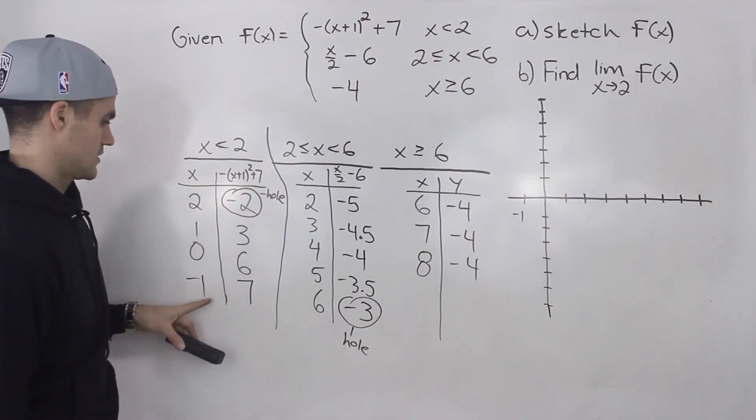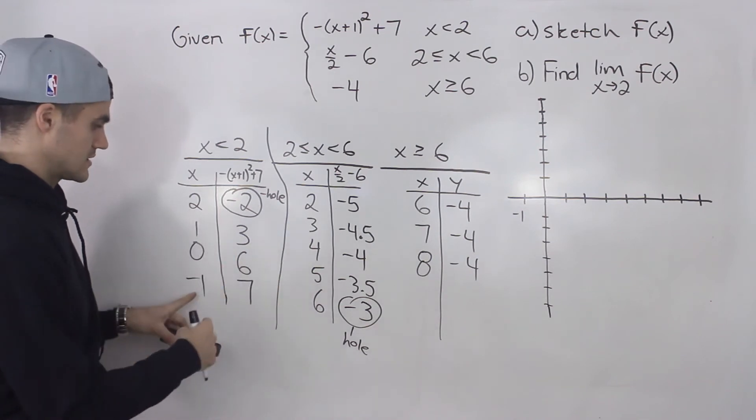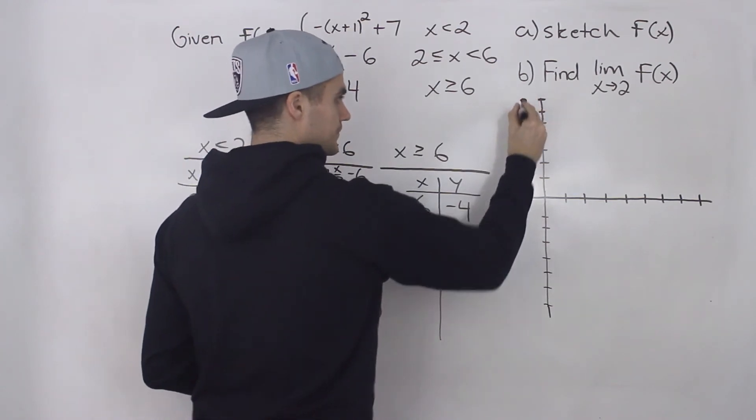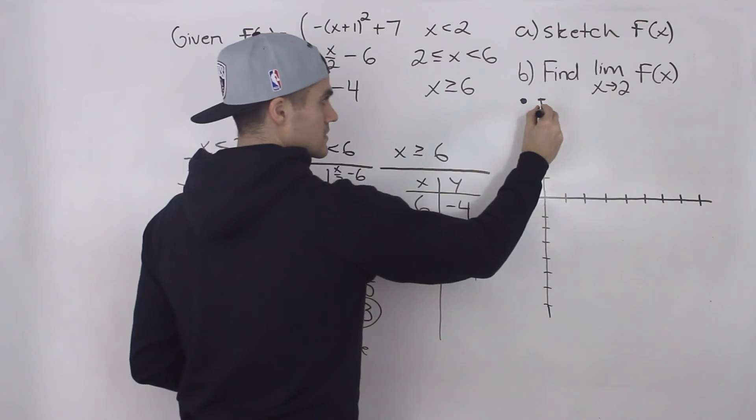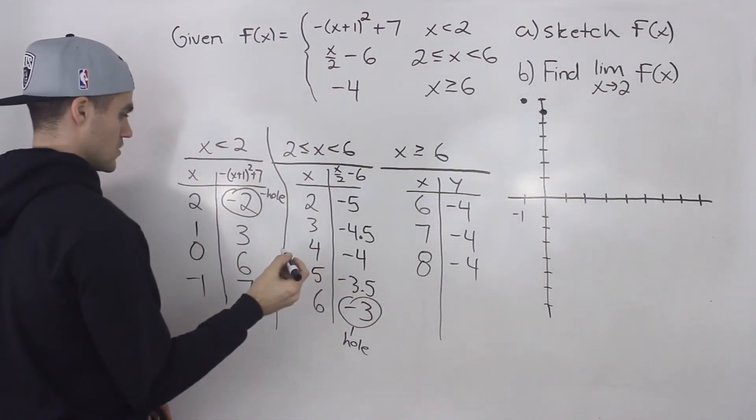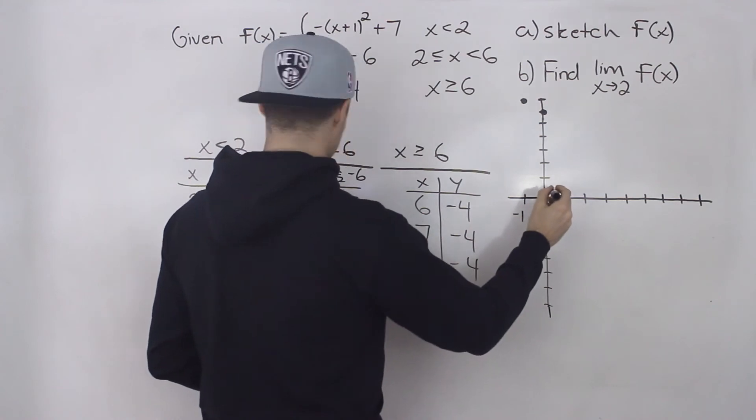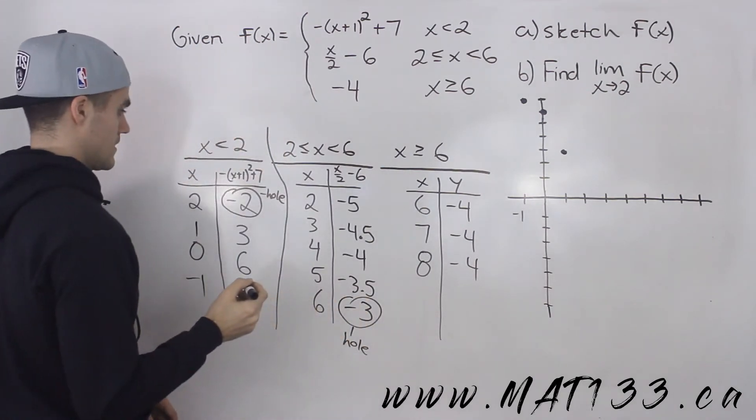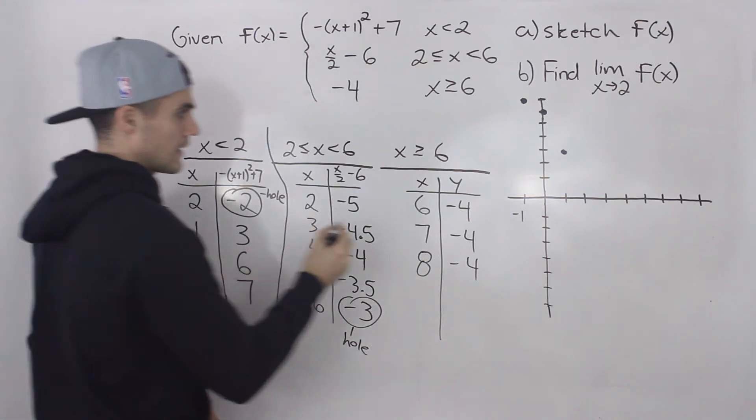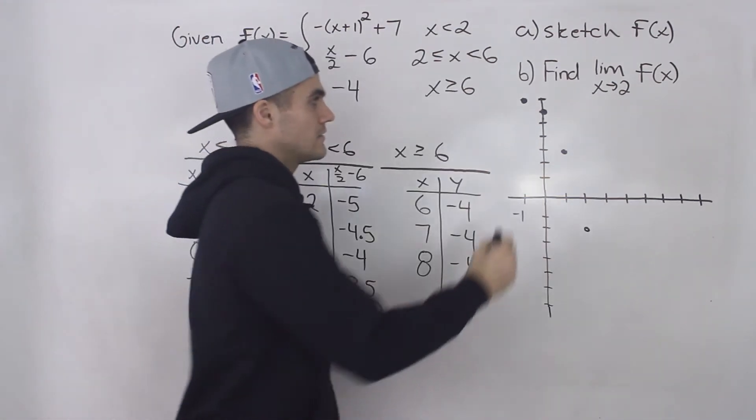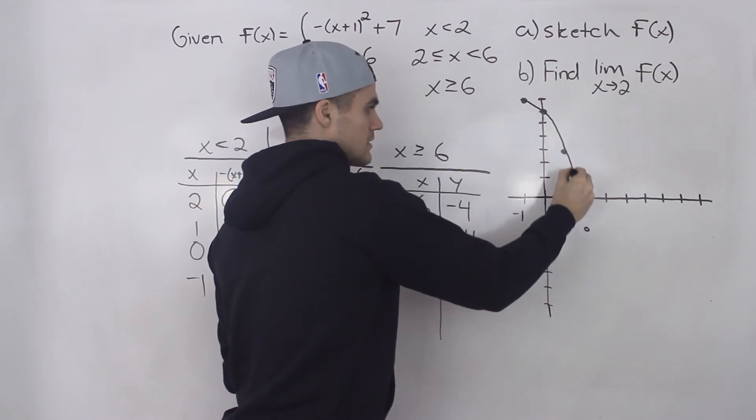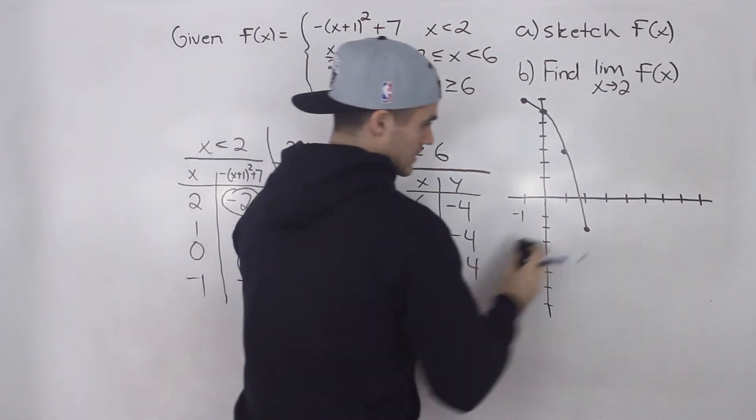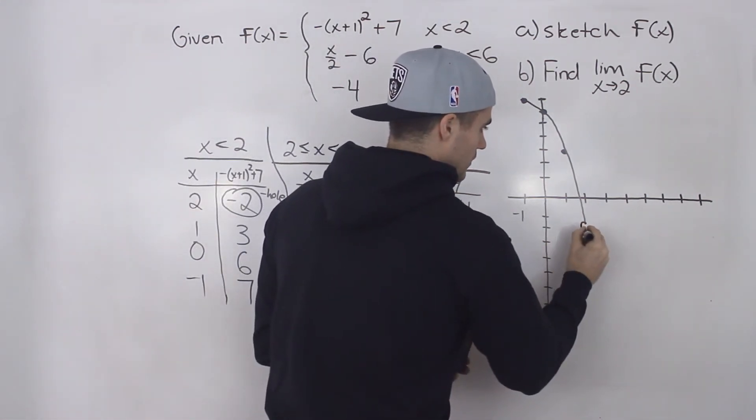So let's start off with this one. So let's start off with the x value that is furthest to the left. So this negative one, we got negative one and seven, which would be up here. And we got zero and six, which is there. One and three, one and three is where that's going to be here. And then two and negative two is down here. So if we combine these points here, it's going to look something like this. Now we mentioned that this point here, this y value of negative two, that's going to be a hole.